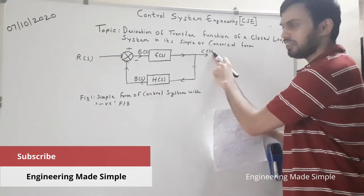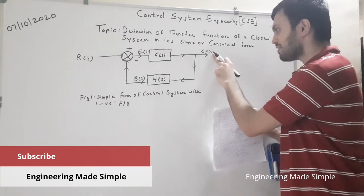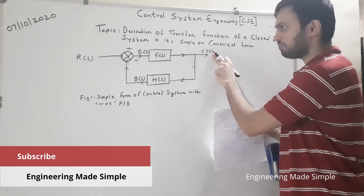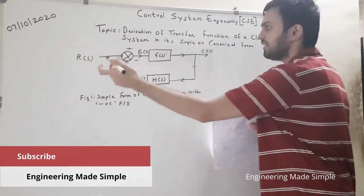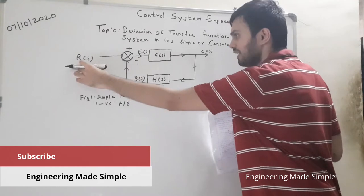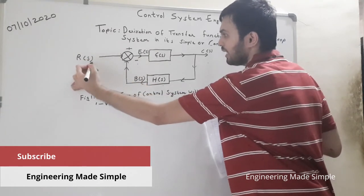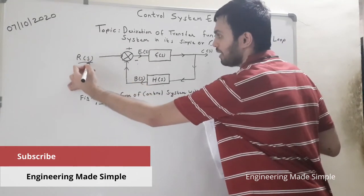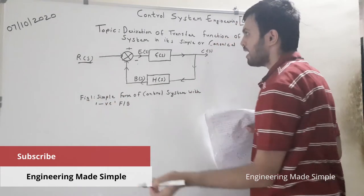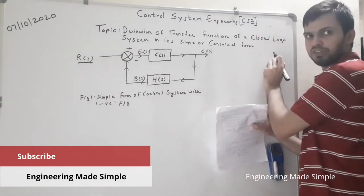C(s) is the controlled output — the Laplace transform of the output of the control system. R(s) is the reference input signal applied, also after taking the Laplace transform. We are interested in finding the overall transfer function of this closed loop system.